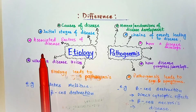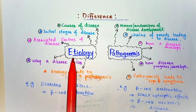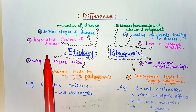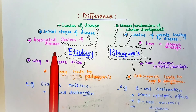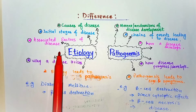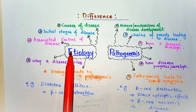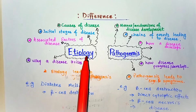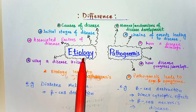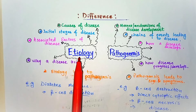The third point that differentiates etiology from pathogenesis is that in etiology we discuss the associated factors or modifying factors of a disease that are responsible for the initiation and progression of the disease. Many common diseases such as hypertension, diabetes, and cancers are caused by a combination of inherited genetic susceptibility and various environmental triggers.